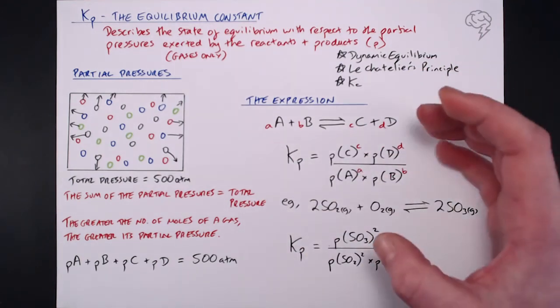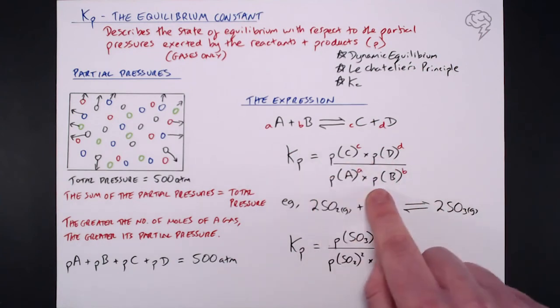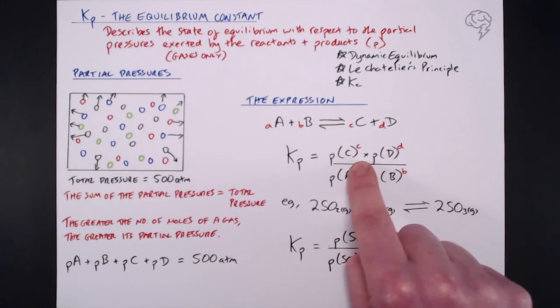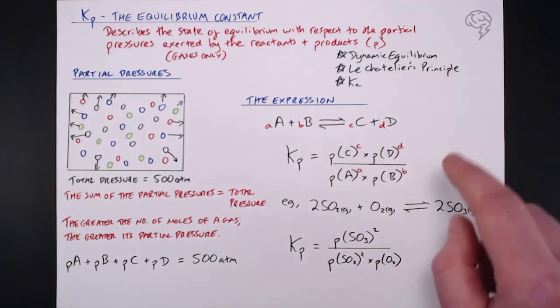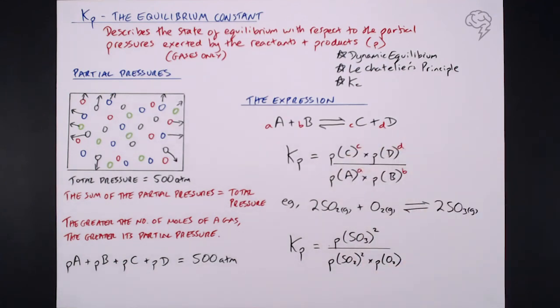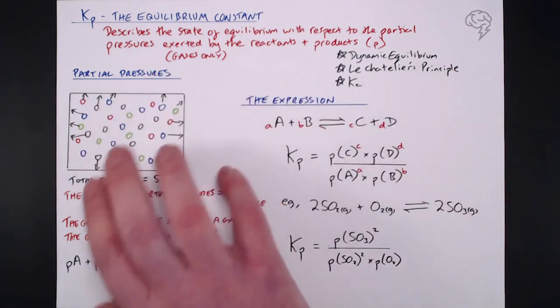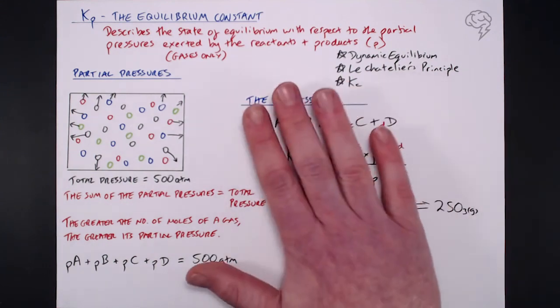Our expression basically is exactly the same as Kc, the way we set it up. But what we need to do is put our notation for partial pressures, which is small p, and we use round brackets, not square brackets. And again, we raise each of these to the power of the number of moles in the equilibrium. So that's how we set up Kp. Those are what partial pressures are. In the next couple of tutorials, we'll talk about some numbers, we'll talk about some units and the types of questions that you're going to get. So that's our introduction.